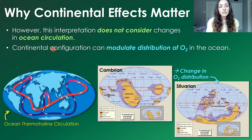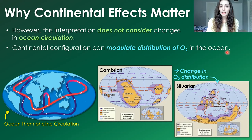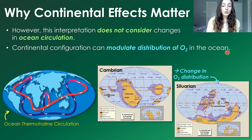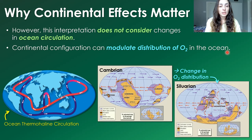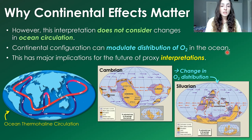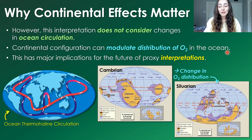Continental configuration can modulate the distribution of oxygen in the ocean. We do have some paleo-redox proxies that are good at getting at global conditions, which are typically used in tandem with other proxies for local conditions to ensure we're getting the right signal. But when we use proxies that reconstruct local conditions, the circulation at the time and continental configuration could play a major role in affecting those oxygen concentrations. We need to make sure we consider this continental configuration and ocean circulation factor when interpreting proxy records.